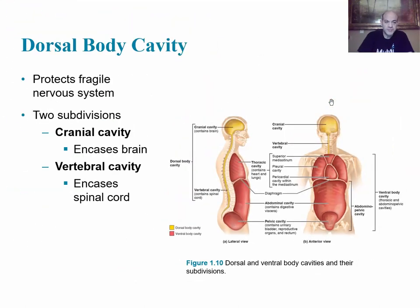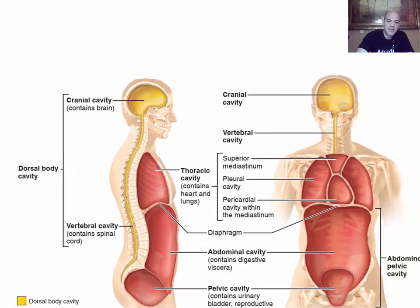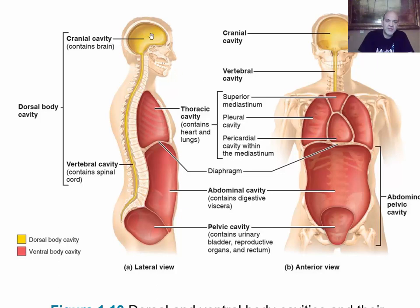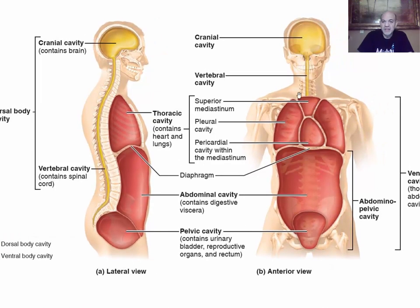The dorsal body cavity provides protection for the nervous system and has two major divisions: the cranial cavity, which encases the brain, and the vertebral cavity, which encases the spinal cord. In the lateral sagittal view, the cranial cavity contains the brain and the vertebral cavity runs along the backbone containing the spinal cord.